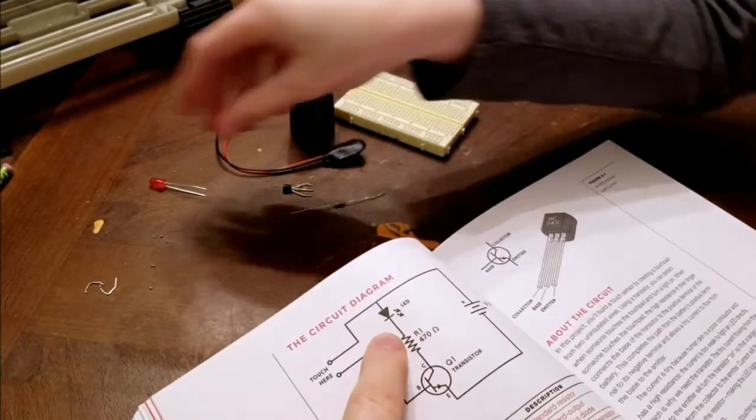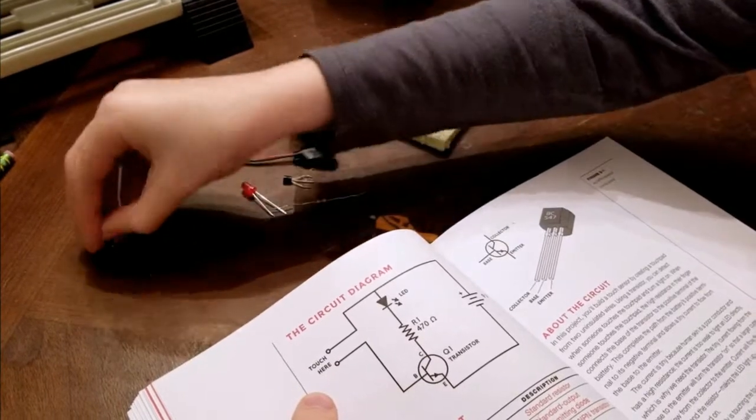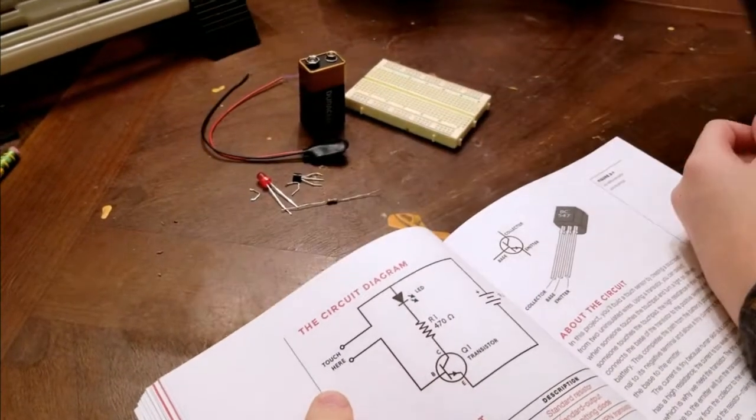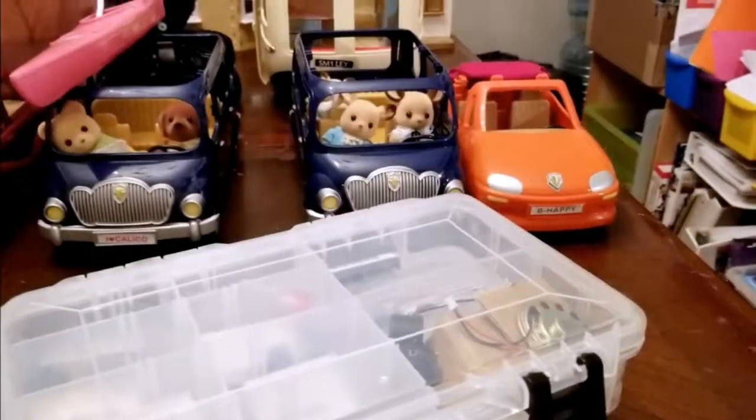The resistor. And then the LED. Then two insulated wires. And we have some jumper wires, right? Oh, they're right there. Perfect.